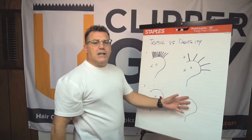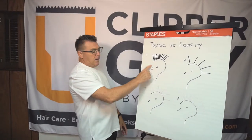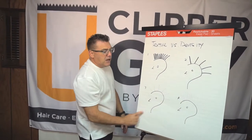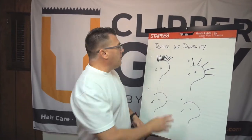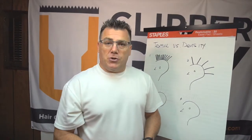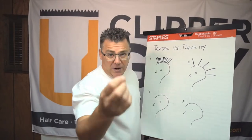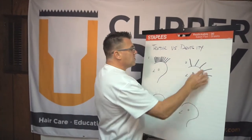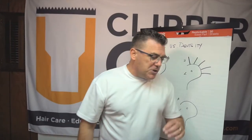Our four friends here represented finer hair and coarser hair, and they represented thicker hair versus thinner hair in terms of density. In this video I want to spend a couple of moments to address coarser hair textures. Coarser hair textures can be high density — hairs per square inch — or low density — less hairs per square inch. So we've got some tips and tricks to talk about for interacting with these two customers.